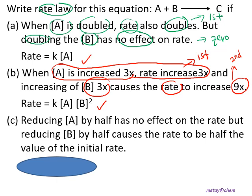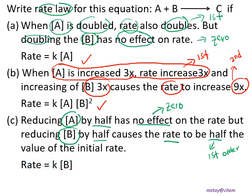For part C: reducing concentration A by half has no effect — this is zero order for A. But reducing B by half also reduces the rate by half — this is first order for B. So the rate law is: rate = k[B].